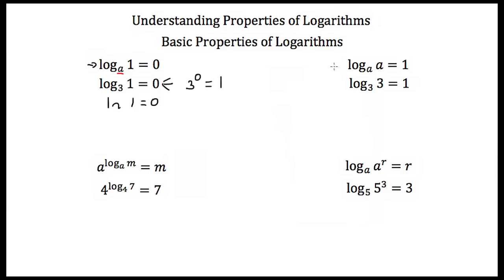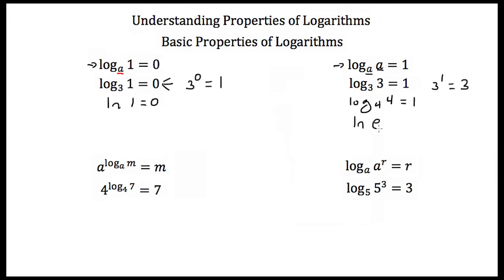Another logarithm property is that if you take the log of the same number that your base is, that's always equal to 1. So if we had the log base 3 of 3, that's equal to 1. I can rewrite this as an exponential: 3 to the first power has to be equal to 3. Similarly, the log base 4 of 4 is equal to 1, and the natural log of e is also equal to 1. So if your base and whatever's inside your log is the same, that's always equal to 1.